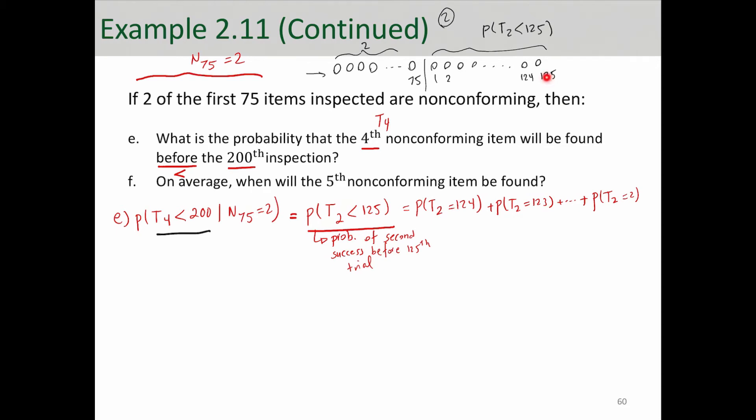And that smarter way is to say that if we have more than two non-conforming in these 125 observations, then we're sure that the second non-conforming happened before the 125th. So this is essentially equivalent to probability of N125 greater than 2.